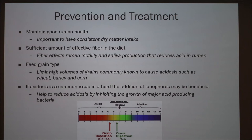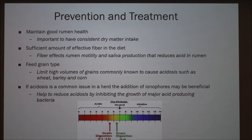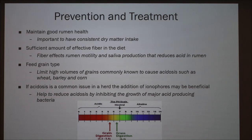For prevention and treatment of acidosis, the two go hand in hand. The most important thing is maintaining good rumen health with consistent dry matter intake. You want to ensure sufficient amounts of effective fiber in the diet, as fiber affects rumen motility and saliva production, which reduces acid in the rumen. You should also watch what type of feed grain you give your cattle and limit high volumes of grains commonly known to cause acidosis, such as wheat, barley, and corn. If acidosis is a common issue in a herd, the addition of ionophores may be beneficial, as they help reduce acidosis by inhibiting the growth of the major acid-producing bacteria.